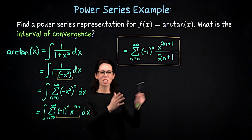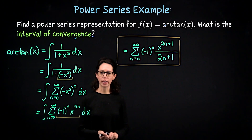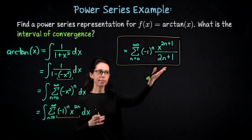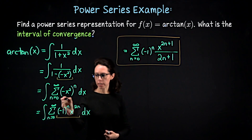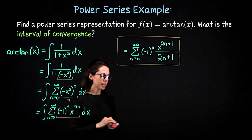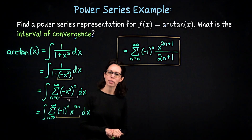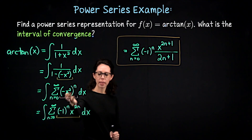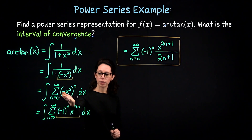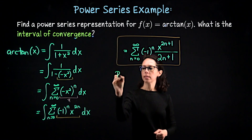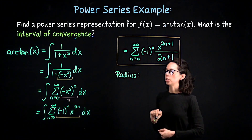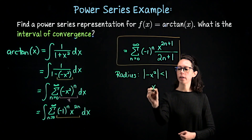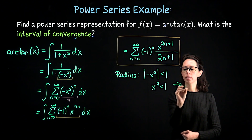We're not quite done yet. In addition to the power series representation, I'd also like to give the radius of convergence and the interval of convergence. I integrated a known power series in order to get this one, so we inherit its radius of convergence — differentiating or antidifferentiating a power series preserves the radius of convergence. The radius comes from requiring that the absolute value of negative x squared is less than 1, which is equivalent to x squared less than 1, giving a radius of 1 centered at x equals 0.